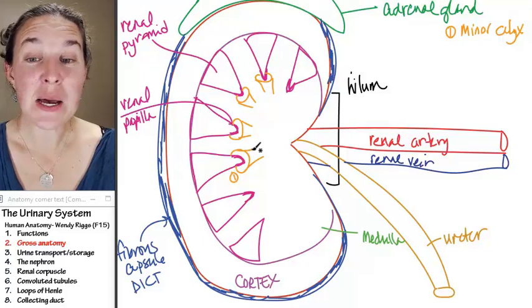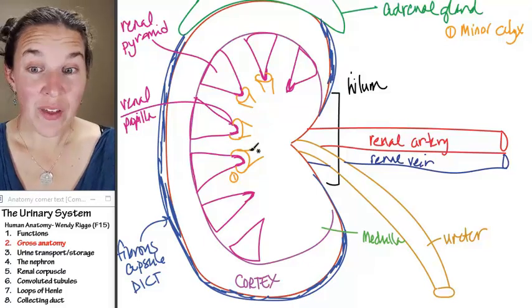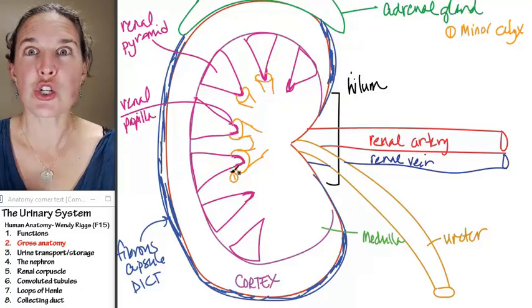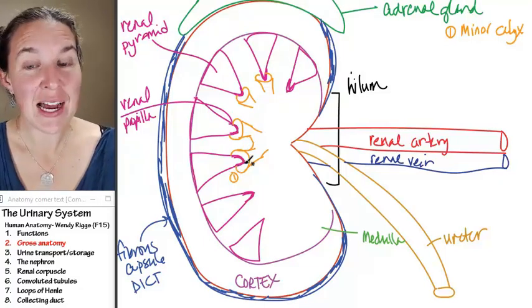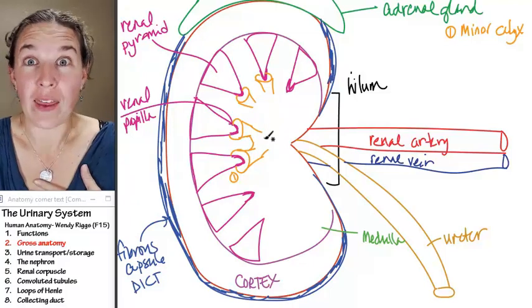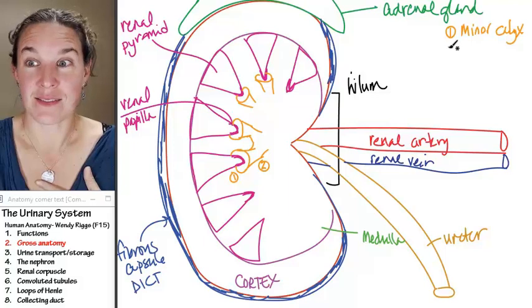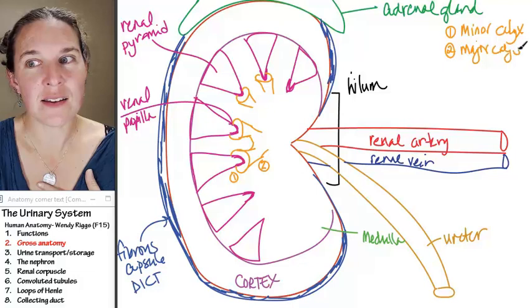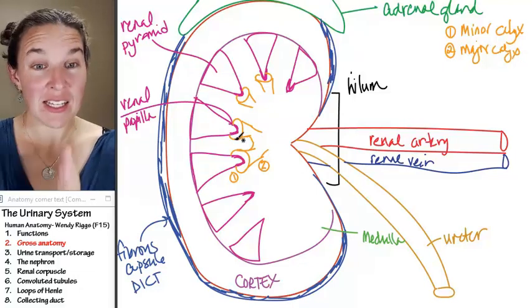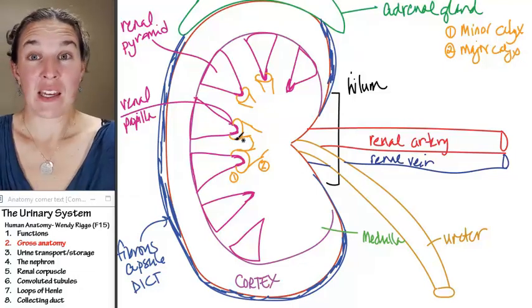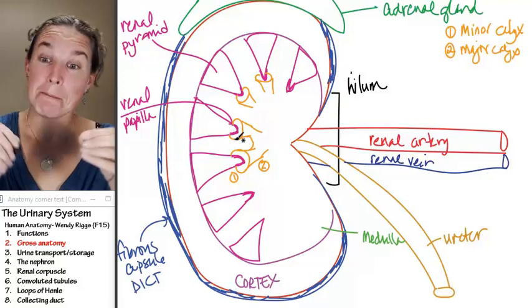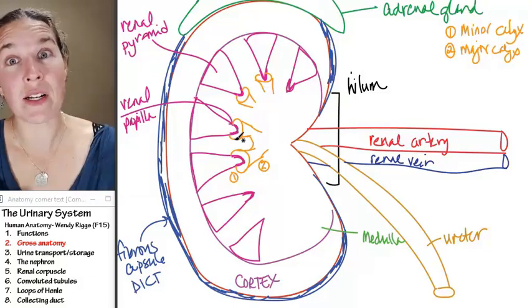Minor calyces combine with other minor calyces. So this is like we're funneling into - two funnels, two minor calyces come together and make a, what do you think? It's this easy. They make a major calyx. The major calyx takes pee from two minor calyces or more.